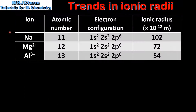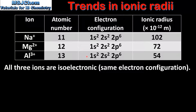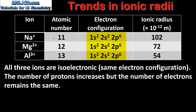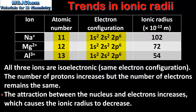Next we look at the first 3 ions in period 3 in more detail. All 3 ions are isoelectronic, which means they have the same electron configuration. By looking at the atomic number we can see that the number of protons increases from the sodium ion to the aluminium ion, however the number of electrons stays the same. This results in a stronger attraction between the nucleus and the electrons, which causes the ionic radius to decrease. So to summarize, we have an increasing number of protons pulling on the same number of electrons, causing the ionic radius to decrease from the sodium ion to the aluminium ion.